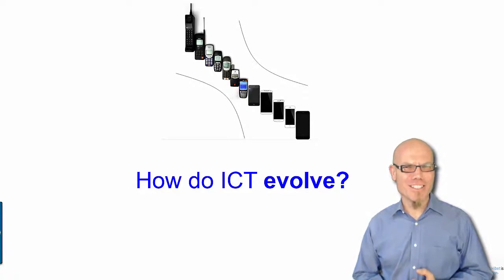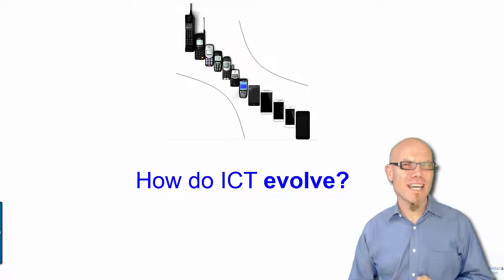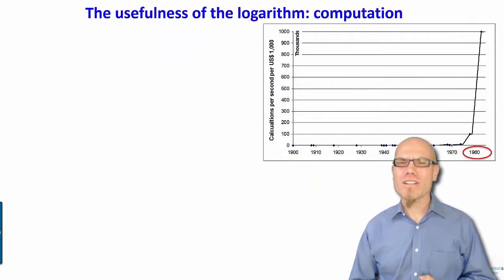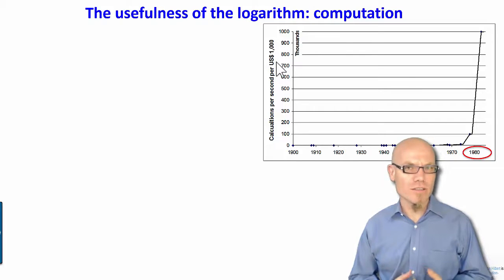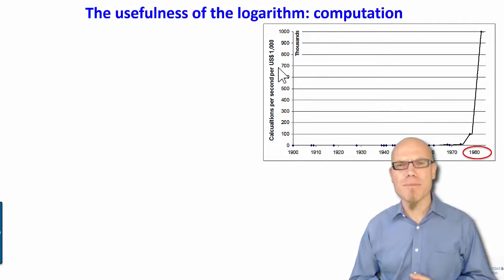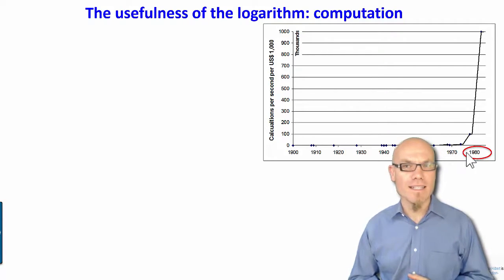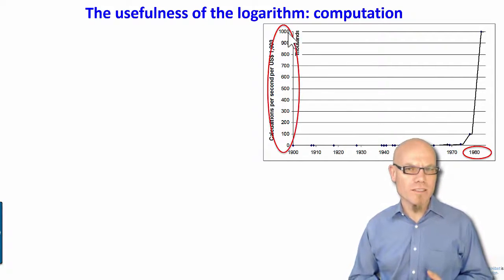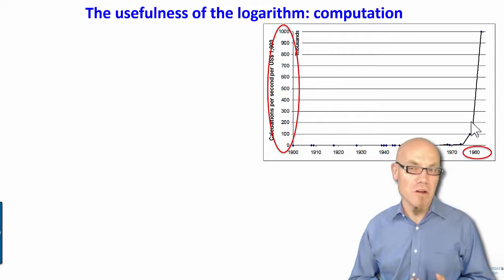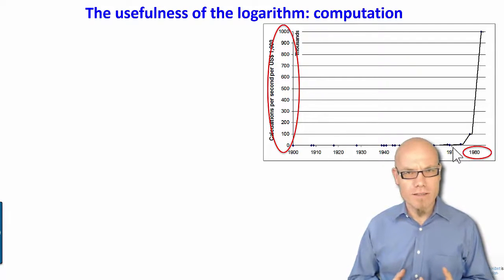Let's apply our theory of technological change and see how information communication technology evolves. For example, we could measure performance on the y-axis in terms of the number of calculations per second you can do for one US dollar. How many calculations per second can you buy on computers? Tracking the 1900s until 1980, our indicator goes up to 1000, and most of the progress happened basically in the last decade from 1970 to 1980.